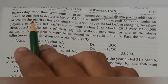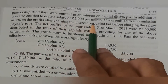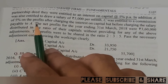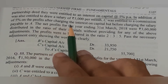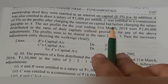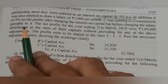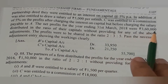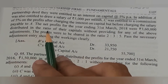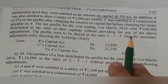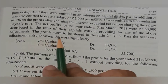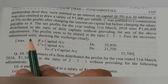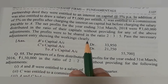In addition, A was also entitled to draw a salary of 5,000 per month. C was entitled to commission of 5% on the profit after charging the interest on capital but before charging the salary. The net profit for the year ending 31st March 2018 was 3,60,000, distributed in the ratio of their capital without providing for any of the above adjustments. The profit was to be shared in the ratio 2:3:5. Pass the necessary adjustment entry showing the working clearly.